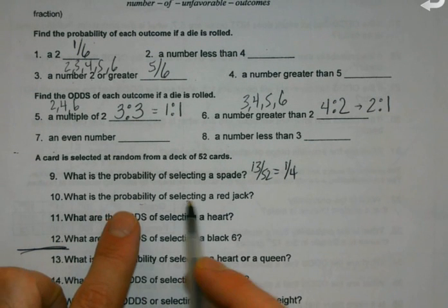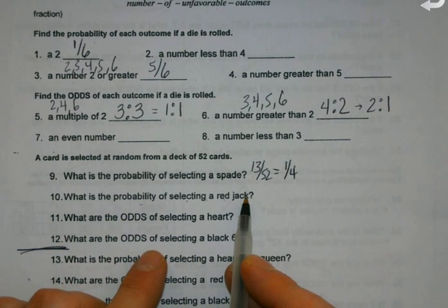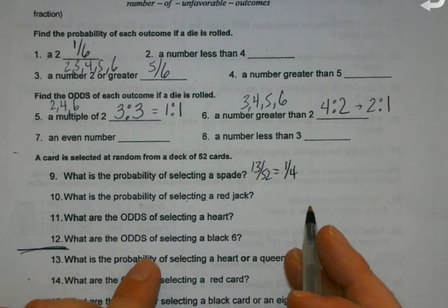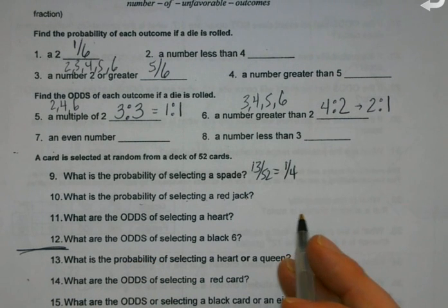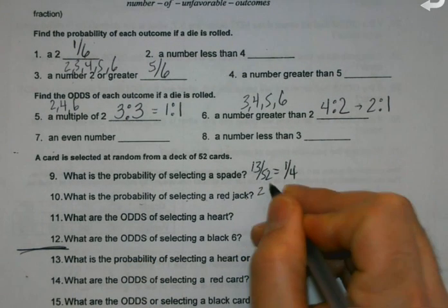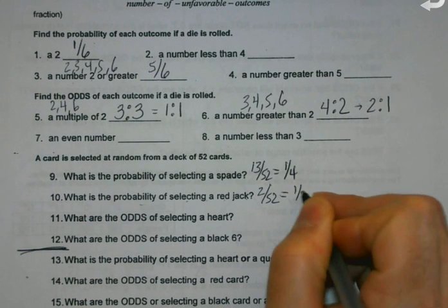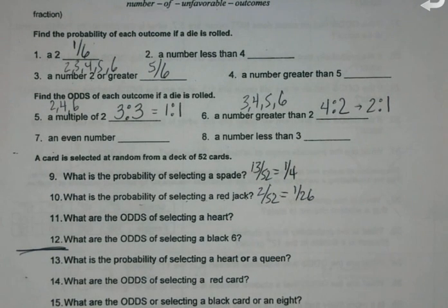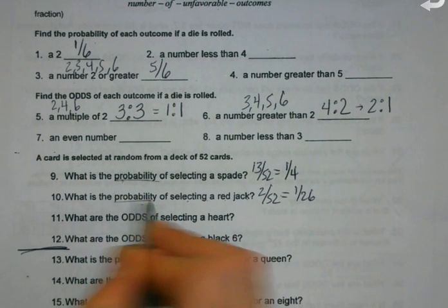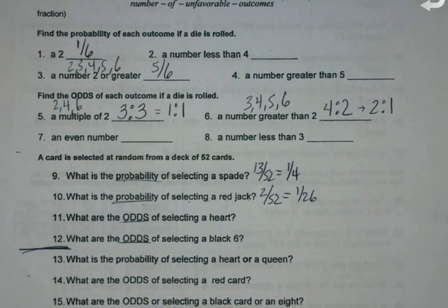So what's the probability of selecting a red jack? Two of them, because there's a diamond and there's also a heart. So 2 out of 52 or 1 out of 26. But again, it's all about this word in the middle. The word's probability. Success is over total.